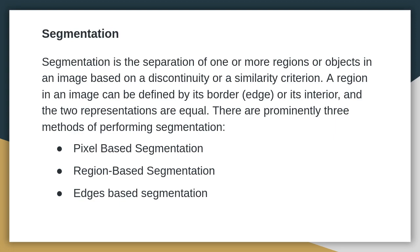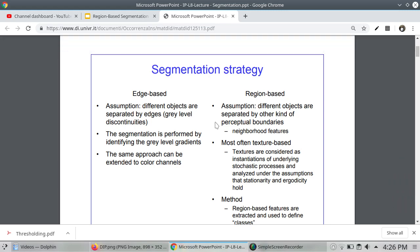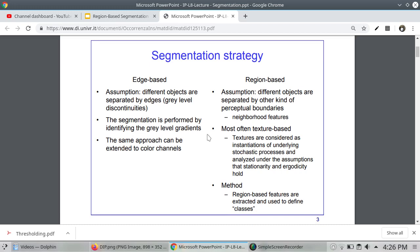We can compare pixel-based segmentation, region-based segmentation, and edge-based segmentation. In edge-based segmentation, different objects are separated by edges. The same approach can be extended to color channels, where segmentation is performed by identifying the gray level gradients across color channels.